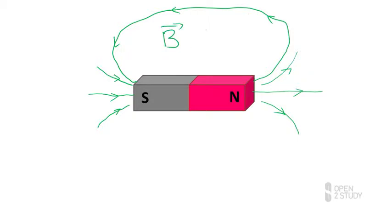We call the magnetic field by the symbol B, and we actually measure it in units of Tesla, although we're not going to be using that unit very much — it's a very large unit.